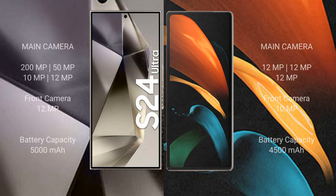The Samsung Galaxy S24 Ultra features a quad-camera setup: 200MP plus 50MP plus 10MP plus 12MP, and a 12MP front camera.